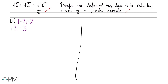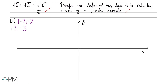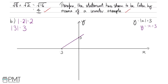To sketch y equals mod of x plus 3, it's easier to first sketch y equals x plus 3. When y is 0, x must be minus 3, giving one point. When x is 0, y is 3, giving another point. This is a straight line connecting those two points, following the y equals mx plus c form with no power of x, so it's linear.